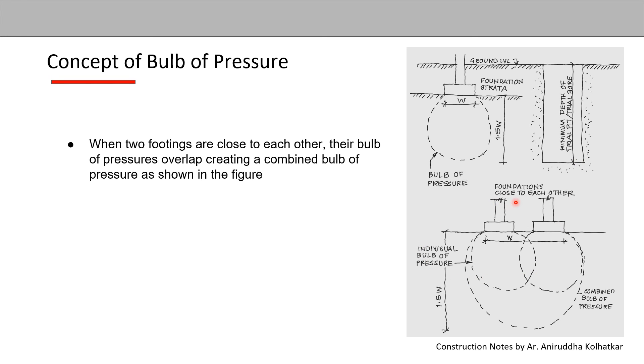Also include this sketch which shows two footings close to each other. Show their individual bulb of pressures in dotted lines, and then a dotted line indicating the combined bulb of pressure. Write 'combined bulb of pressure' and 'individual bulb of pressure.' Again, mention the width of the two footings combined and the depth of 1.5W of the combined bulb of pressure.